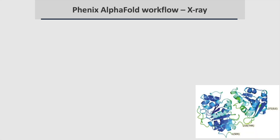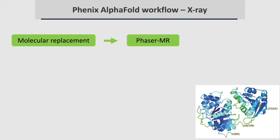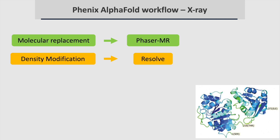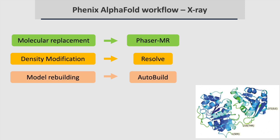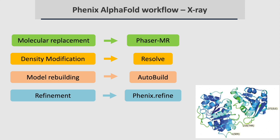If you have x-ray data for your molecule, you can carry out molecular replacement with the likelihood-based Phaser tool. For density modification, you can use Resolve, another likelihood-based method. For model building, you can use AutoBuild. And for refinement, you can use the likelihood-based Phoenix Refine tool.